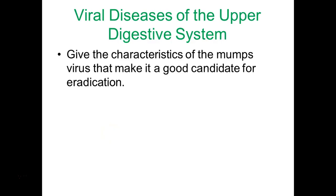Mumps — mentioned earlier because it's part of the MMR vaccine: measles, mumps, and rubella. There's the potential we could eradicate this infection. We have a vaccine, so we can prevent infection. How did we get rid of smallpox? We had an effective vaccine. Similarly, we need to vaccinate everybody and maintain isolation from infected individuals to prevent spread. Mumps appears to be human-only, which means we have one population to work with.